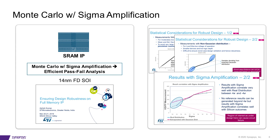For non-Gaussian distributions as well, sigma amplification delivers accurate results with much fewer multi-corner runs. The higher sigma values obtained from sigma amplification can be used to get an understanding of the robustness of the circuit.